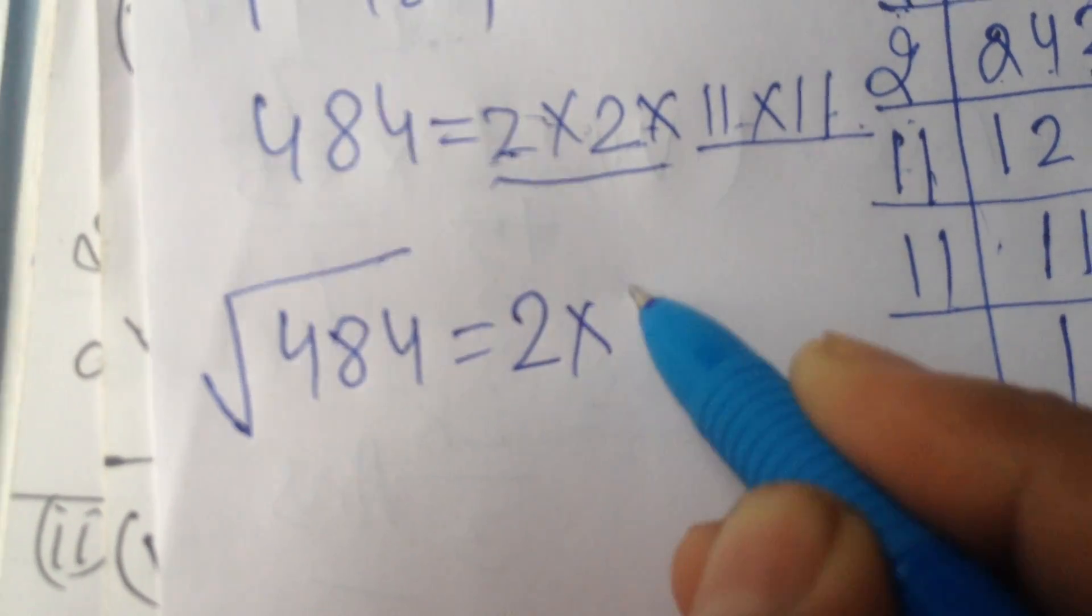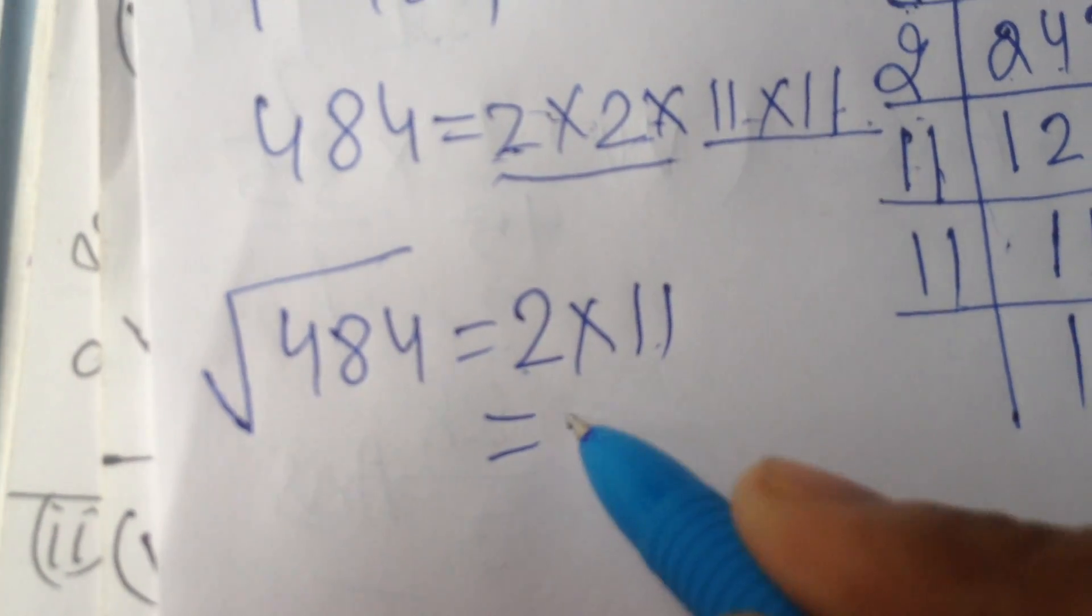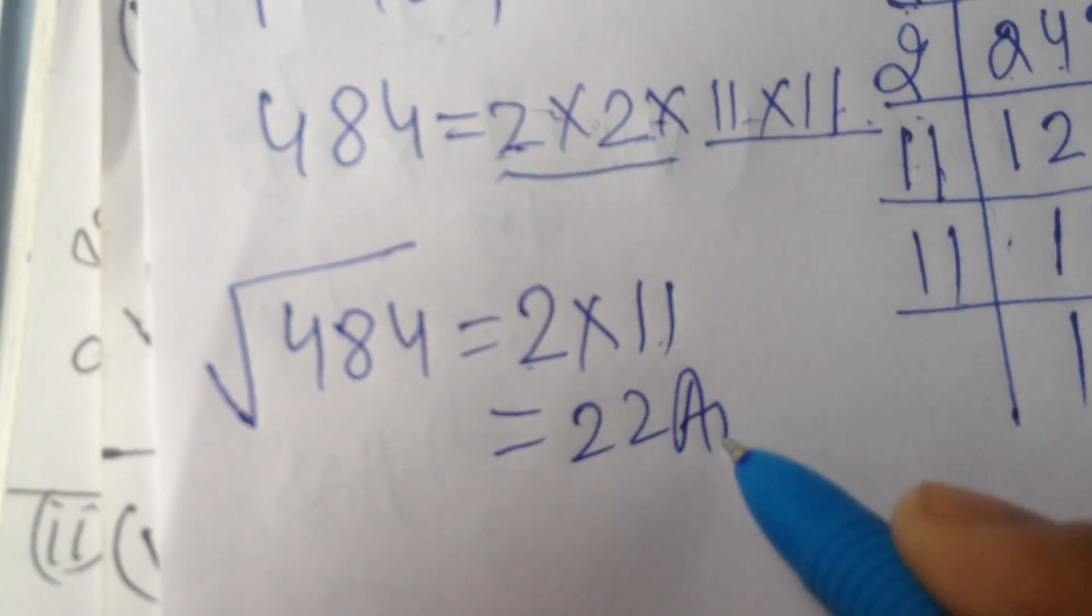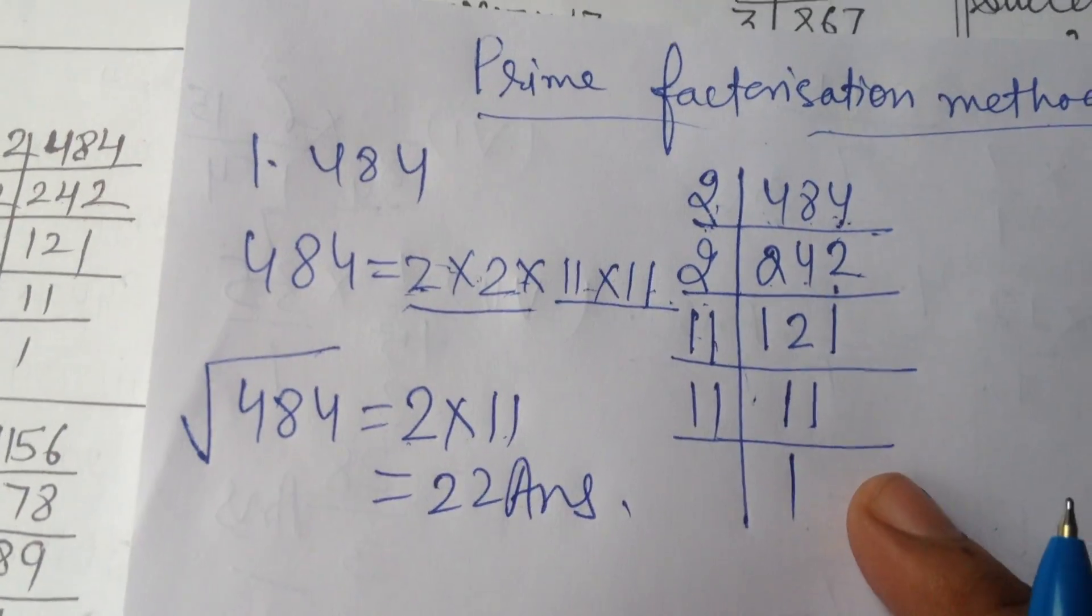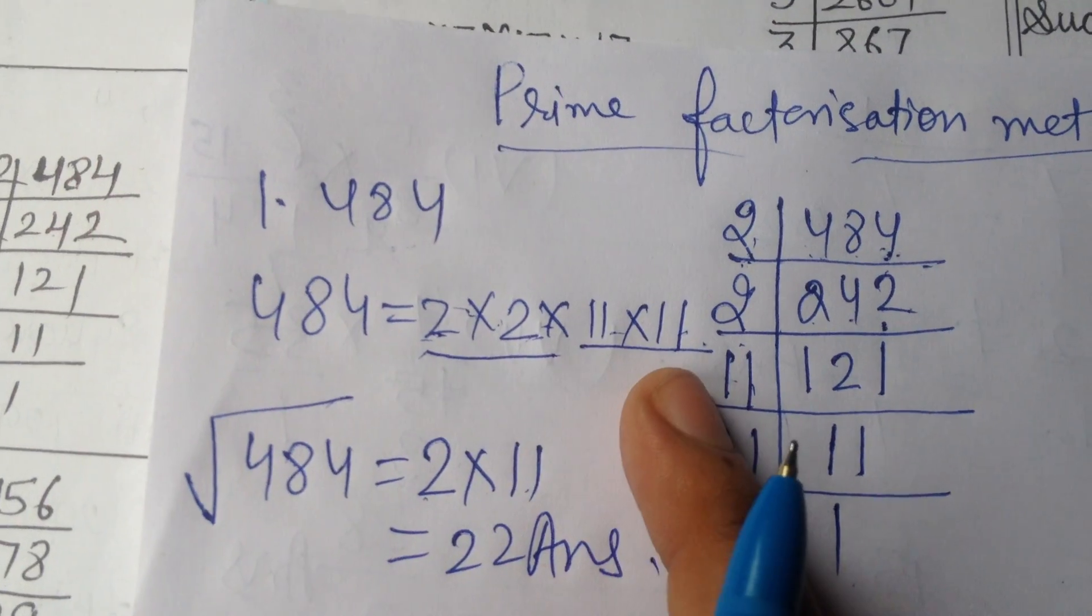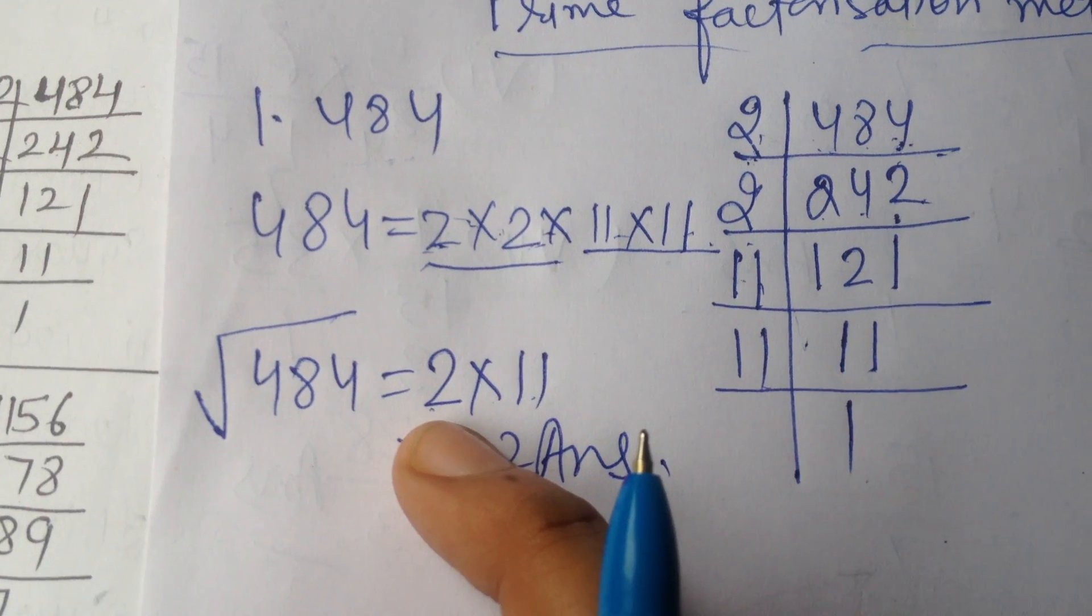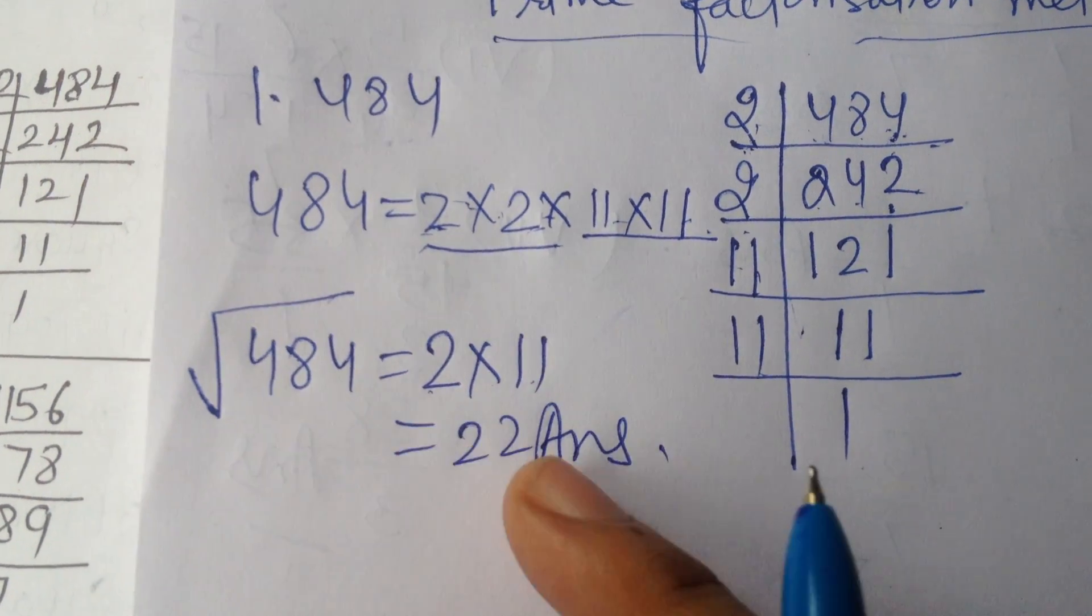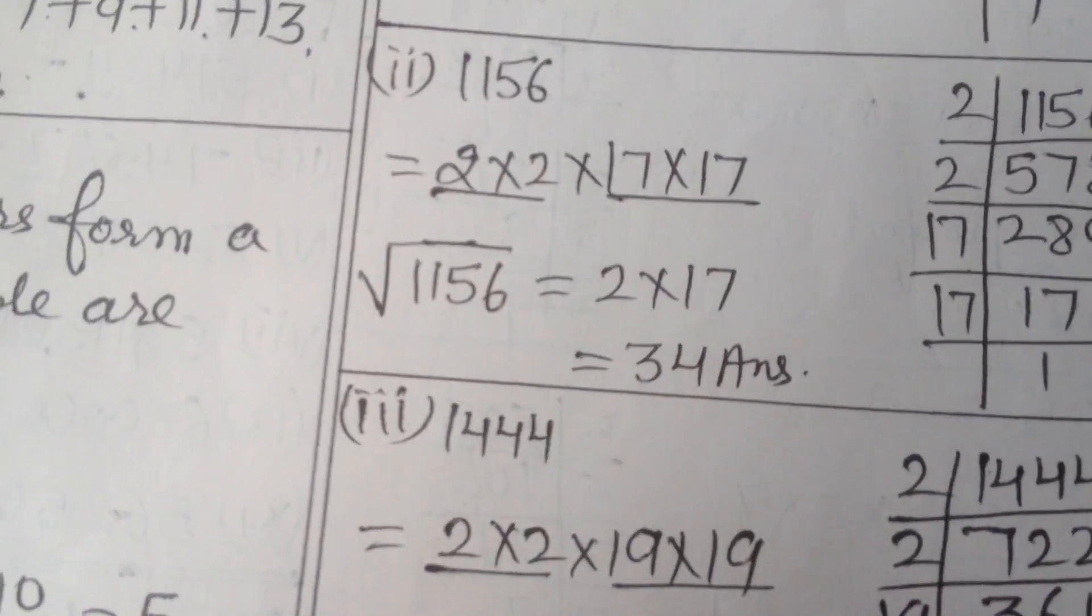Take 1 number from that pair. From this pair take one 2, from this pair take one 11. Now multiply it. 2 times 11 is 22. This will be the answer. So square root of 484 is 22 Ans.